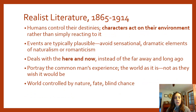Continuing with traits of realist literature: characters have some control over their lives and destinies. They're able to act on their environment and have some autonomy rather than simply reacting to what's around them. As opposed to Romanticism, which is exotic, far away, and distant, realist literature deals with the here and now.